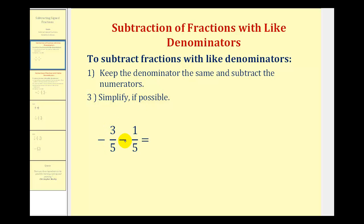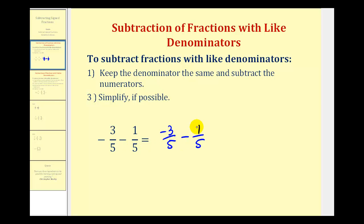For negative three-fifths minus one-fifth, for negative fractions I prefer to have the negative sign in the numerator. So I'll rewrite this as negative three over five minus one over five. Now remember, instead of subtracting a positive fraction, we could write this as plus a negative one-fifth, but I'm going to go ahead and leave this as subtraction.